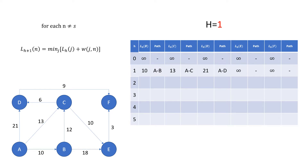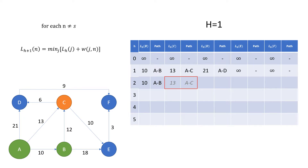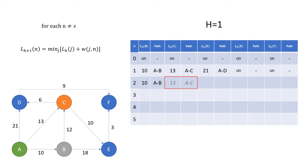We can now perform them again for h equals 1. Starting with node b, if we were to perform the calculation again, we would come out with the same value of 10, so this does not change. For node c, we have two predecessors, but this time we cannot instantly rule any of them out. Starting with node a, we can see the value comes out to the same as before — currently, this is the best route length we have found. Performing the calculation for b, with a previous path length of 10 and the length of the path from b to c of 12, we have a total route length of 22. As this length is not less than 13, we can ignore this route. We can now say the minimum result for all possible values of j is 13, and the route is directly from node a to node c.